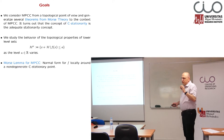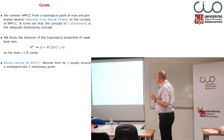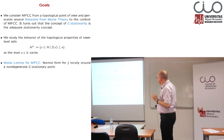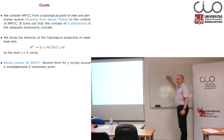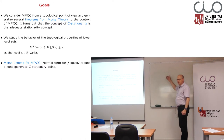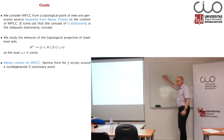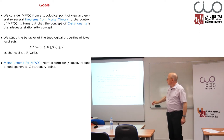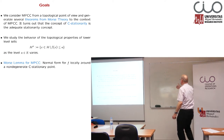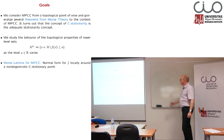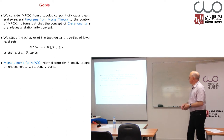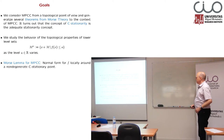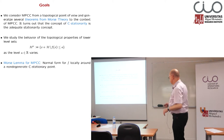The first thing we will do is a so-called Morse lemma for MPCC. A Morse lemma is a normal form. We can always — if we assume that the functions are linearly independent — use the gradient as new variables. That means if we have one pair of constraints, then a normal form would look like that. And if we generalize this to this more sophisticated structure, the question is how can we describe a normal form, which turns out to be a Morse lemma.